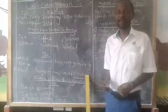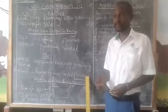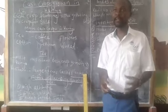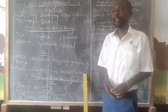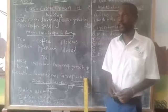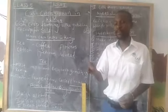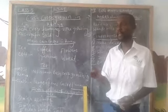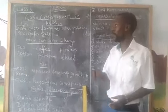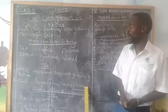So these crops, they are planted and when they mature, they are harvested and sold. So that is what we call cash crops — crops that are grown for sale.